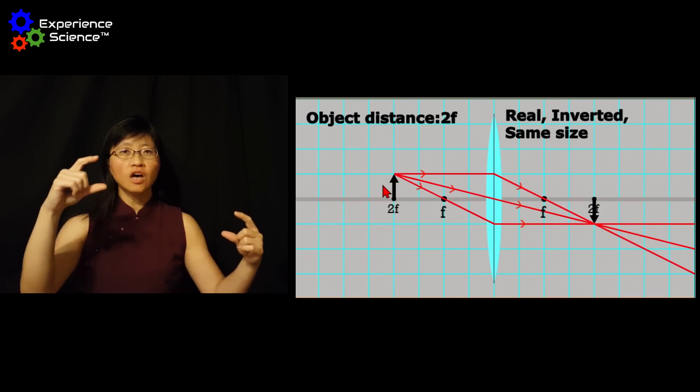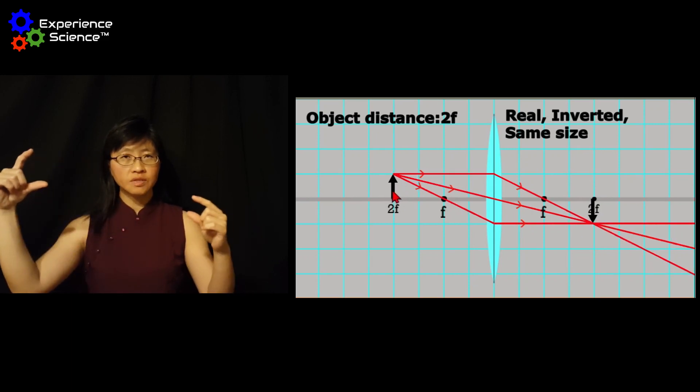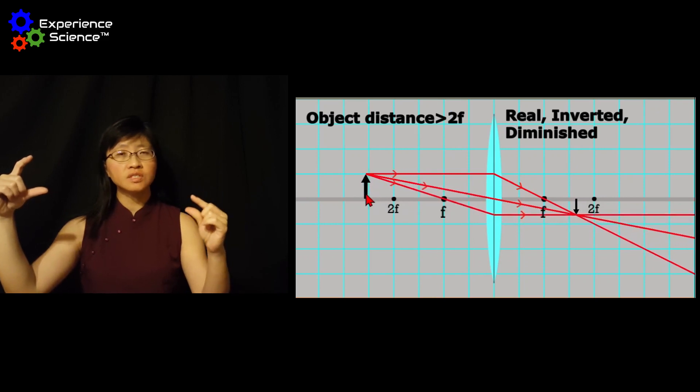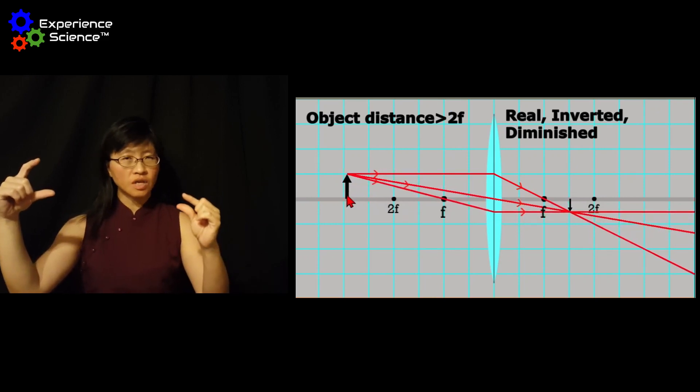When we move this object further away from the lens, you will notice that the image follows in the same direction, but it is now diminished.